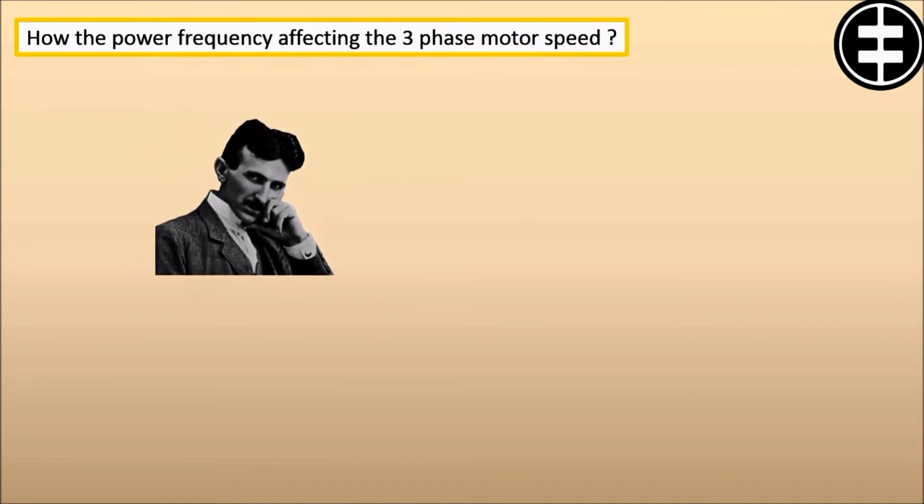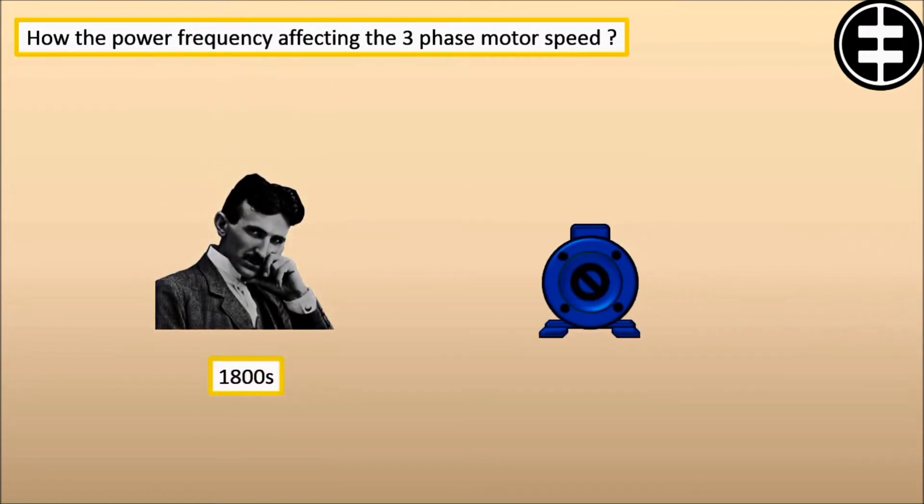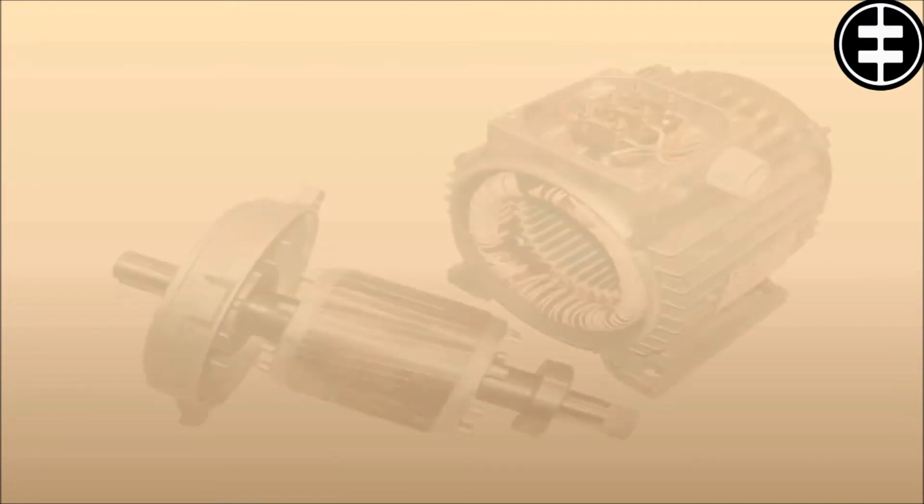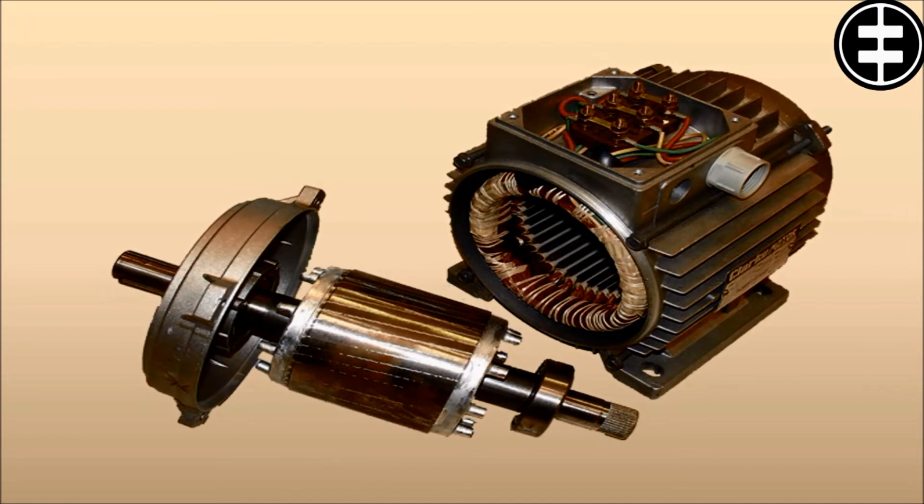For better understanding how the power frequency affects the three-phase motor speed. Back in the late 1800s, Nikola Tesla invented the three-phase AC motor. You can imagine the effect if Mr. Tesla didn't invent the AC motor. At least we wouldn't make this video. In Mr. Tesla's design there are two main parts.